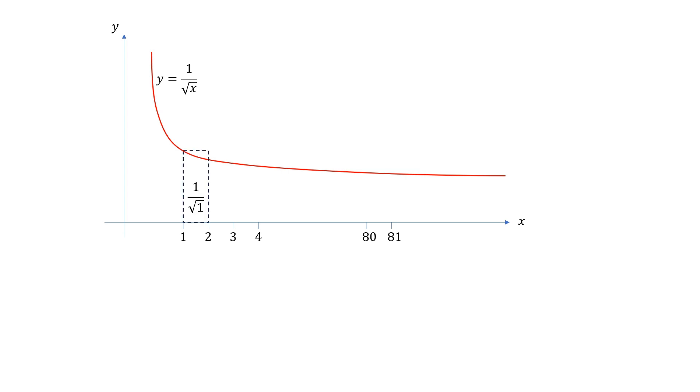Now let's consider this rectangle. The height of this rectangle is 1 over root 1, the value of the function at 1, and the width is 1, the distance between 1 and 2. Let's continue this all the way to 81. The next rectangle has height 1 over root 2, all the way to the last one which has the height of 1 over root 80 and width 1.